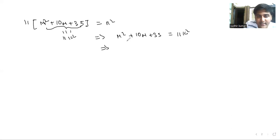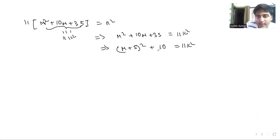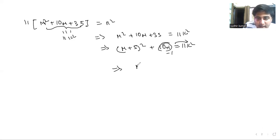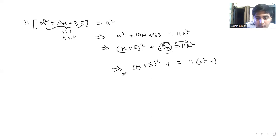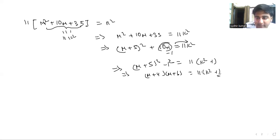We can rewrite the left-hand side as (m+5)² + 10. Adding and subtracting 1 and rearranging gives (m+5)² − 1 = 11k² − 11, which factors as (m+4)(m+6) = 11(k²−1).